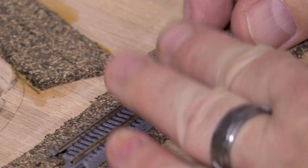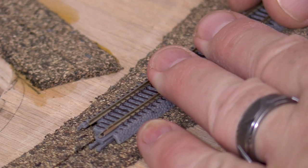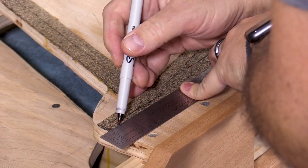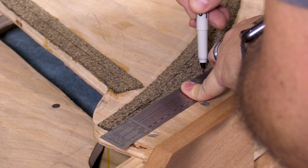Using some Microtrain Z-Scale track, I can repeat the process. I'm lining up one rail on one of the standard gauge rails. Now I can connect the dots to approximate the locations for the rails.